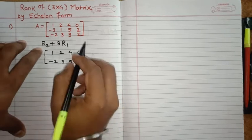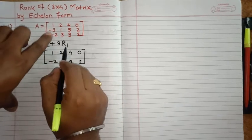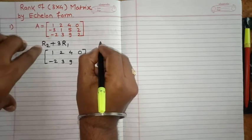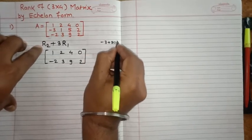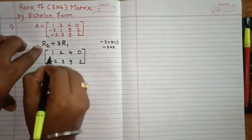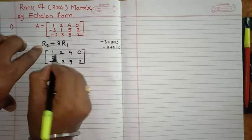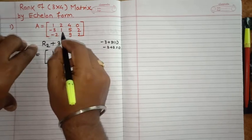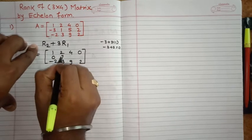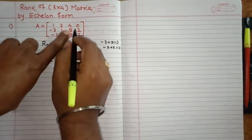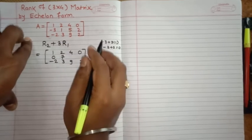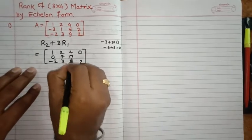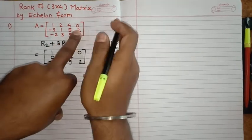I'll make changes only on R2. So R2 carries minus 3 plus 3 into R1. 3 into 1 is 3, minus 3 plus 3 is 0. Similarly, R2 has 1 plus 3 into 2, that's 6 plus 1, which is 7. Here 4 plus 3 into 4, that is 12, gives 17. And lastly, 2 plus 3 into 0, that is 2.